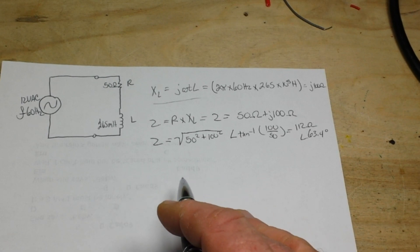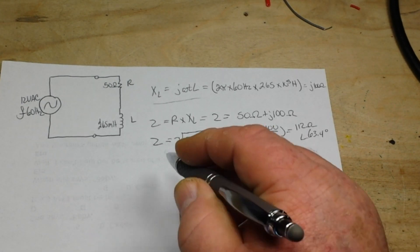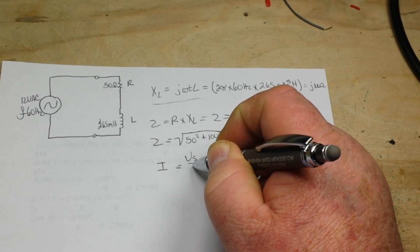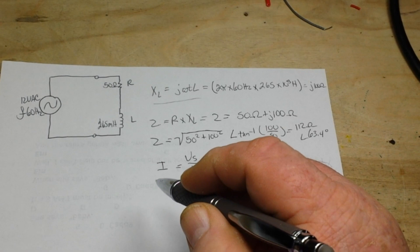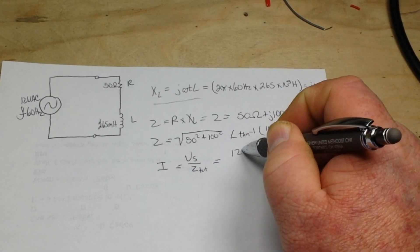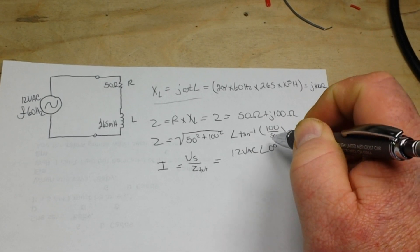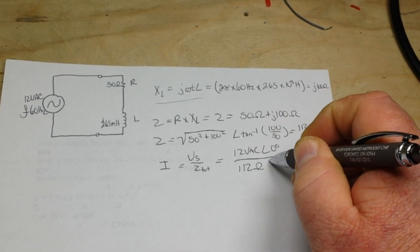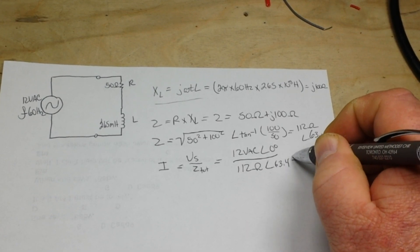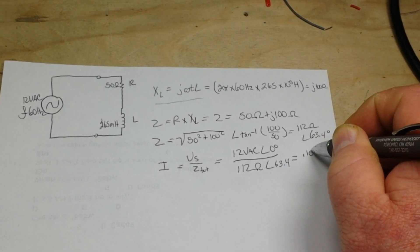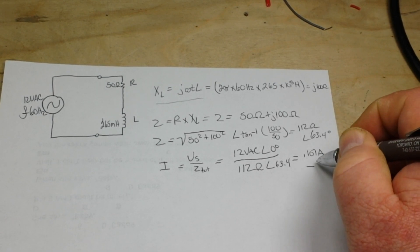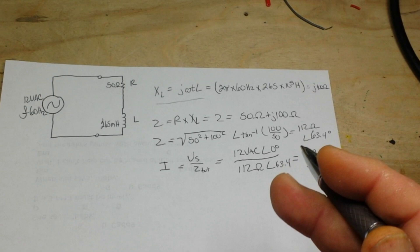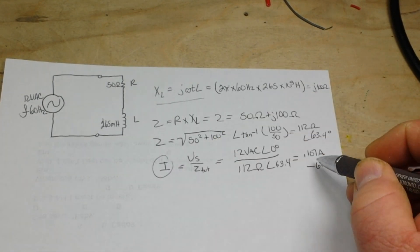Now we can find the current in our circuit as well by using AC Ohm's law, and that simply says that I equals VS over Z total. That's 12 volts AC at 0 degrees over 112 ohms at 63.4 degrees, or 0.107 amps at negative 63.4 degrees. What that means is that the current lags behind the applied voltage by 63.4 degrees.